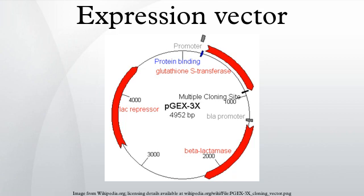Escherichia coli is commonly used as the host for protein expression, but other cell types may also be used. An example of the use of expression vectors is the production of insulin, which is used for medical treatments of diabetes.